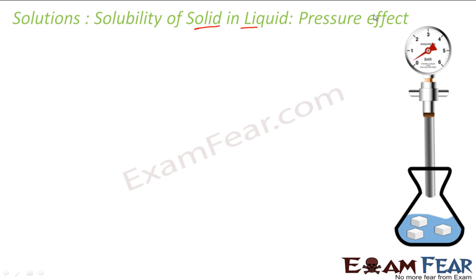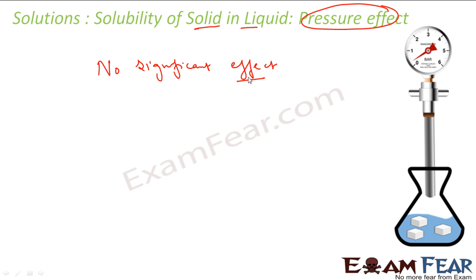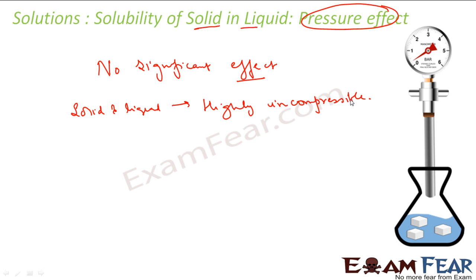Next, regarding the effect of pressure on solubility of solids in liquid: there is no significant effect. This is because solids and liquids are highly incompressible. Since they are highly incompressible, they have almost zero response to pressure changes, and thus changing pressure has very little or no impact on the solubility of solids in liquids. However, for gases in liquids, pressure does have an effect, since gases are compressible.